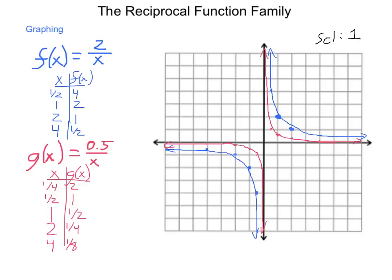The relationship between f of x and g of x is that they have the same domain, the same range, and asymptotes at the same locations. The only change is that the graph in blue, f of x, is a vertical stretch of g of x — the values are 4 times as high for any given x value. Our standard graph would be in between them with an a value in the numerator of 1.